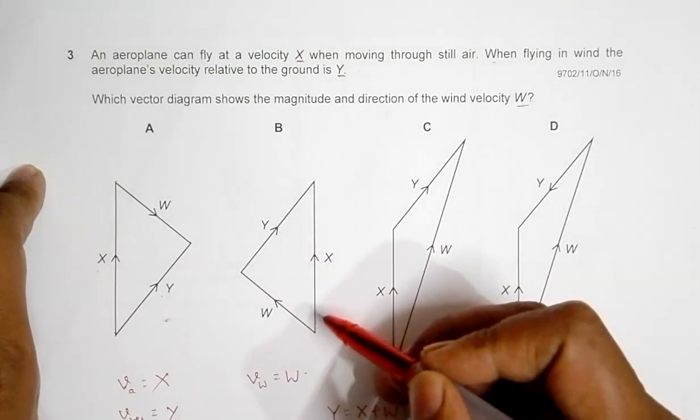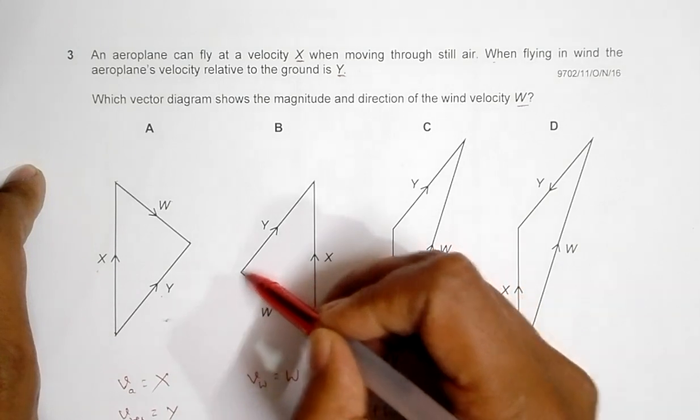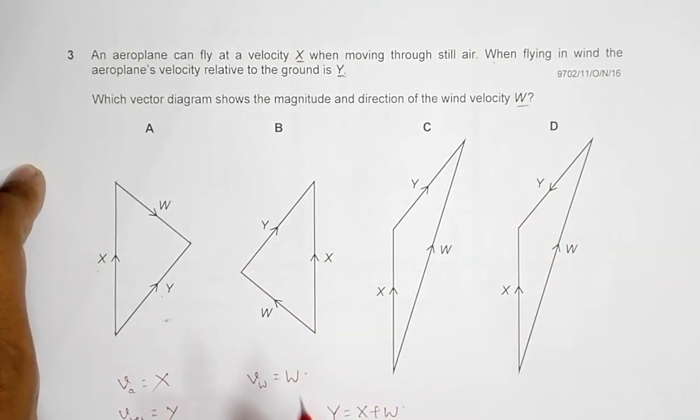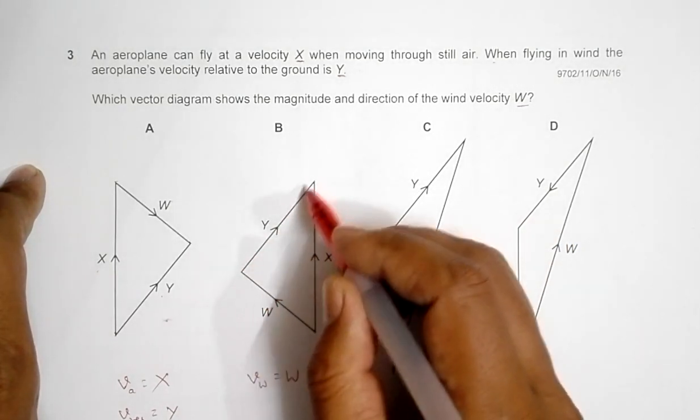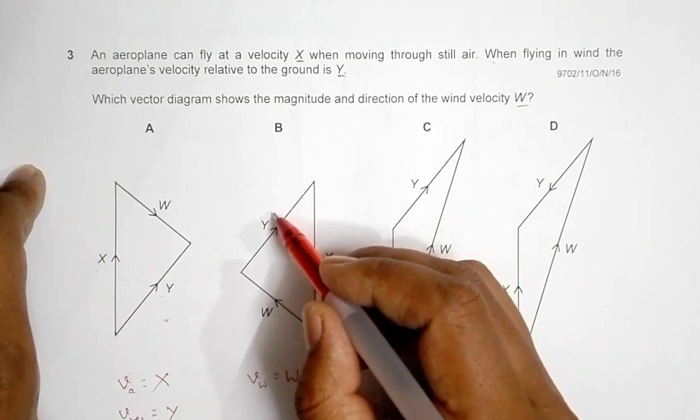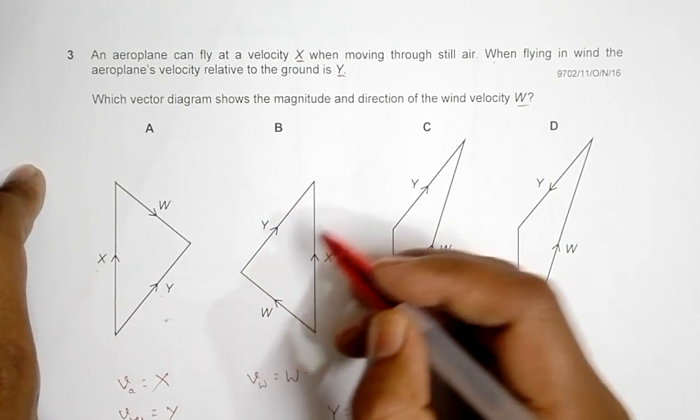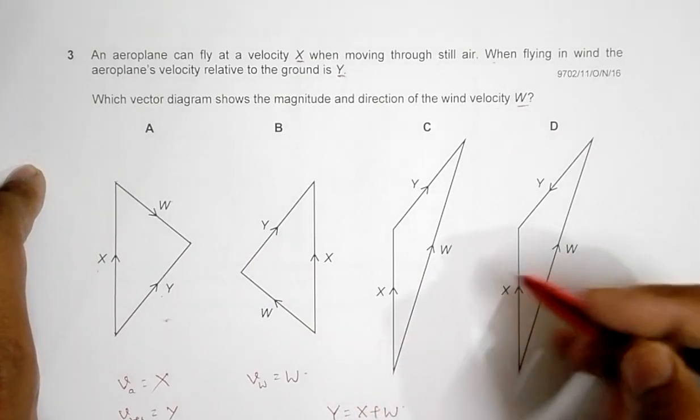In choice B, it seems as if w plus y equals x, because y starts after w ends, which is not the equation here.